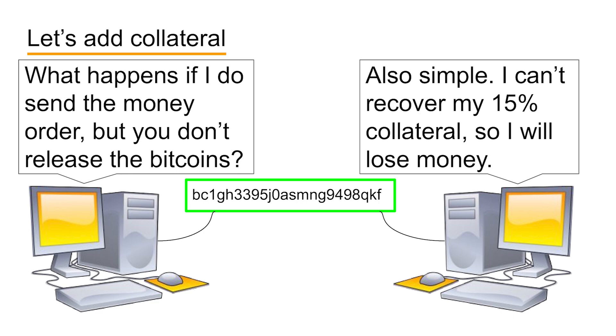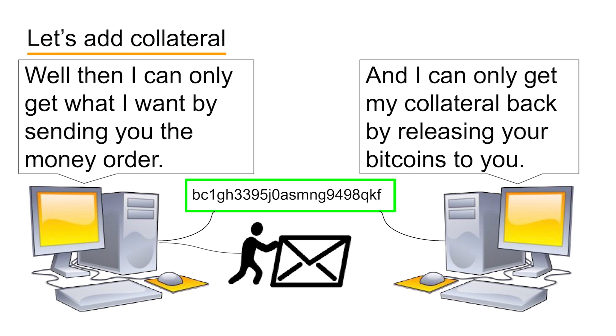So the worst case scenario for Bob is no longer a wash. The worst case scenario for him — in fact the likely scenario if he cheats — is that he loses money. It's similar for you. When you start your trade and want to buy some Bitcoins, you first have to put 15% collateral in before you do anything else. So now, if you never send Bob his money order, you're on the hook for 15% of the value of the trade. Setting up trades this way incentivizes you and Bob to cooperate. Each of you knows that if you don't follow through with the trade, you're likely to lose money, at least in the form of your collateral.